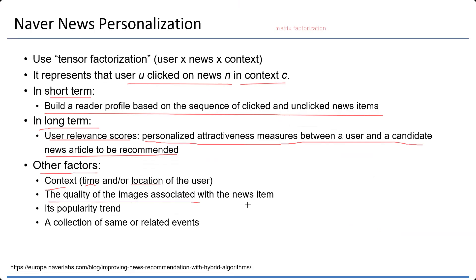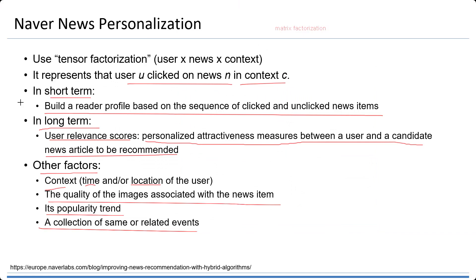Also, the quality of the image associated with the news item can affect personalization, as well as its popularity trend. If the news is popular, it might be an item that can be recommended. Or a collection of same or related events — for example, if most cities have the fall season with events like fireworks in Seoul or festivals in Yongin, those will appear in the news.